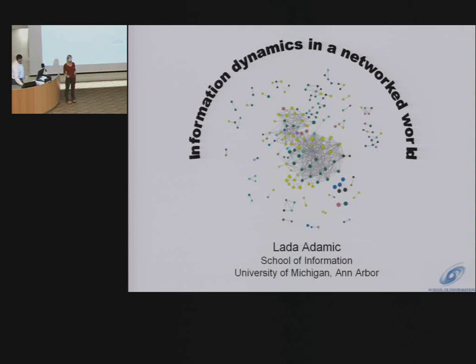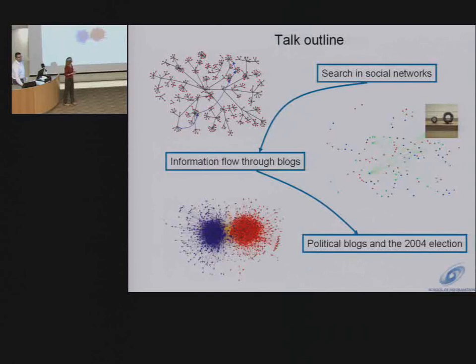First I'll talk about how one might search social networks using data gathered from online communities. Next I'll talk about how information flows in networks. And finally, if there's time, I'll describe a little study we did of political blogs and what their linking behavior was during the 2004 election.